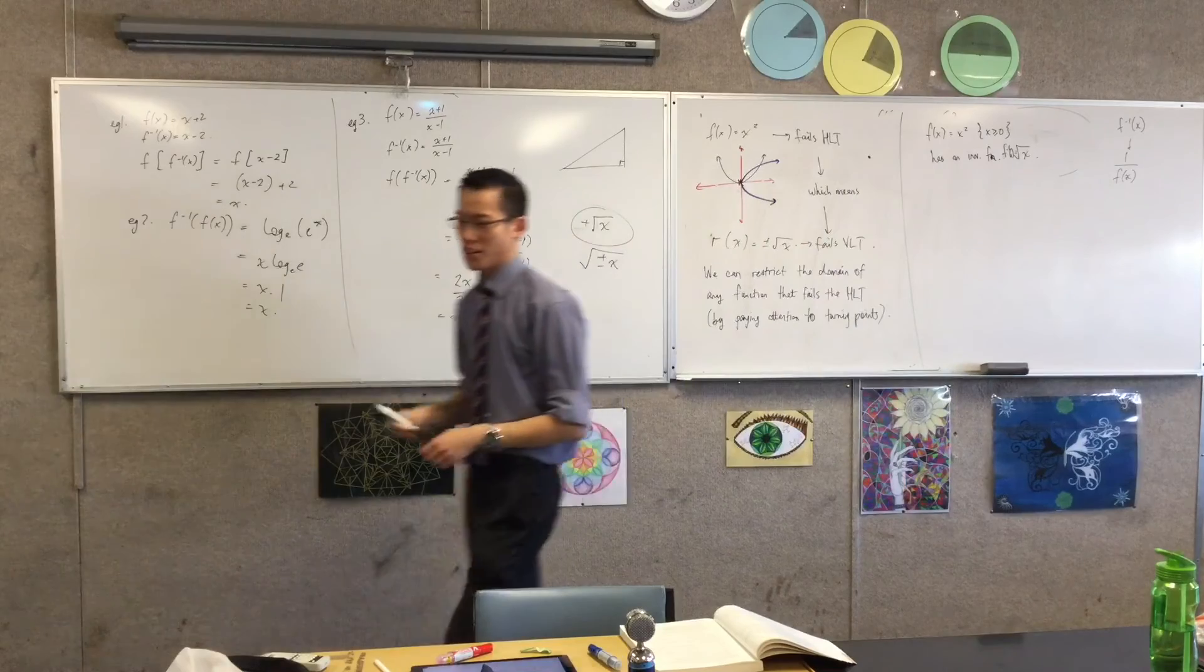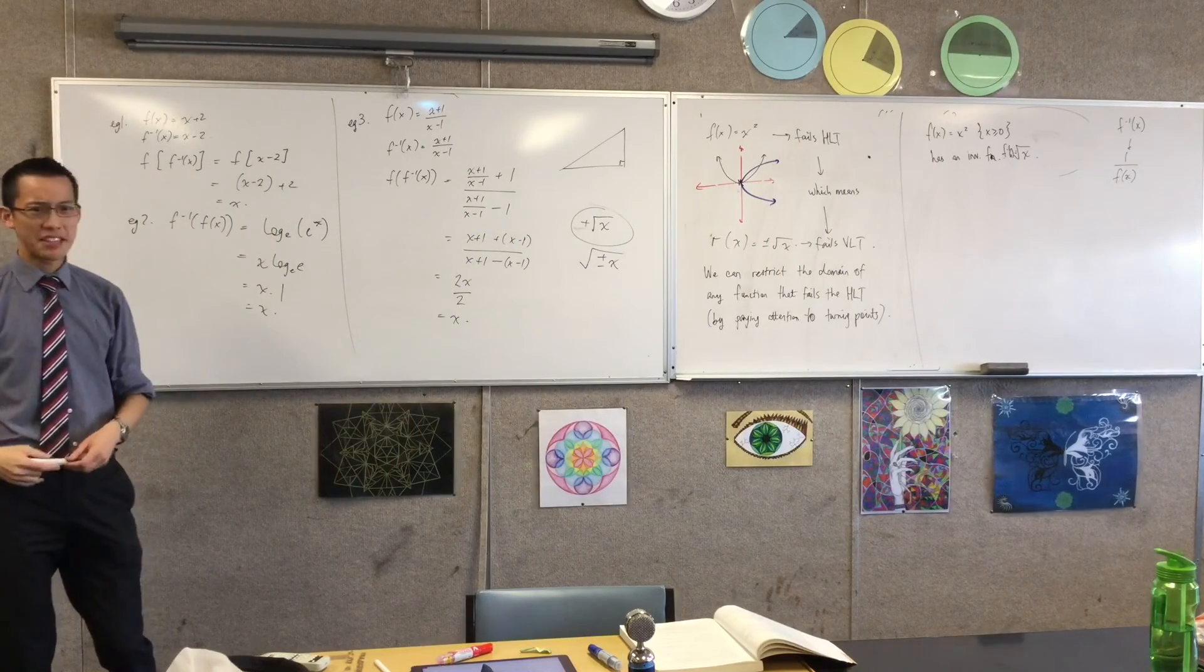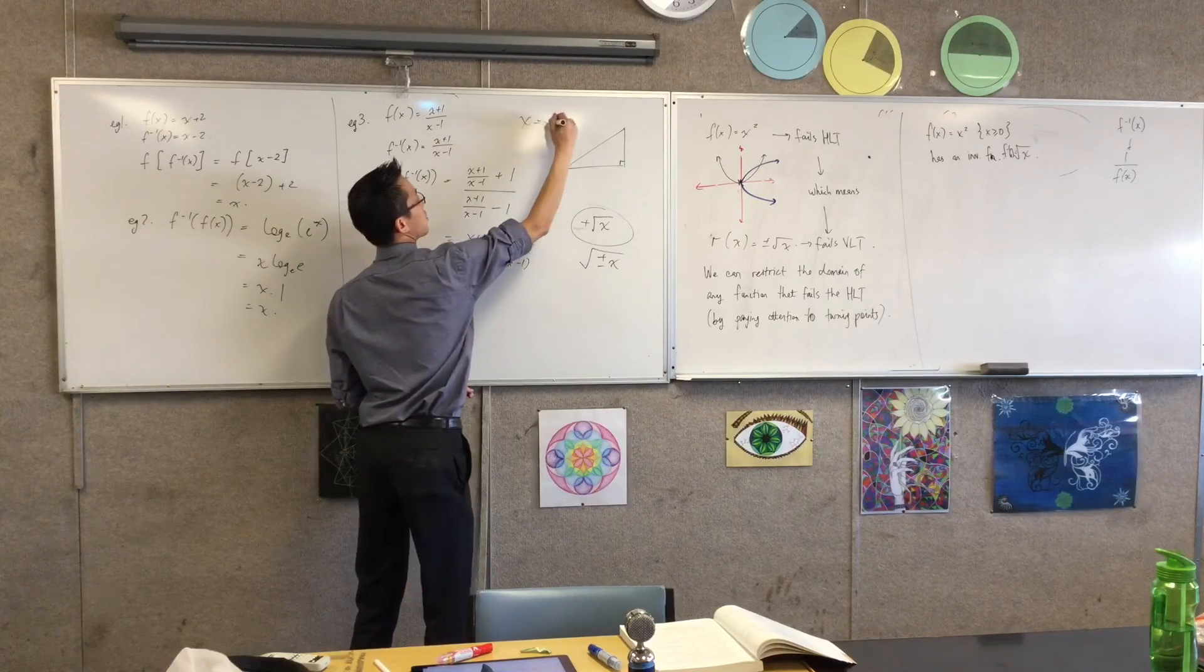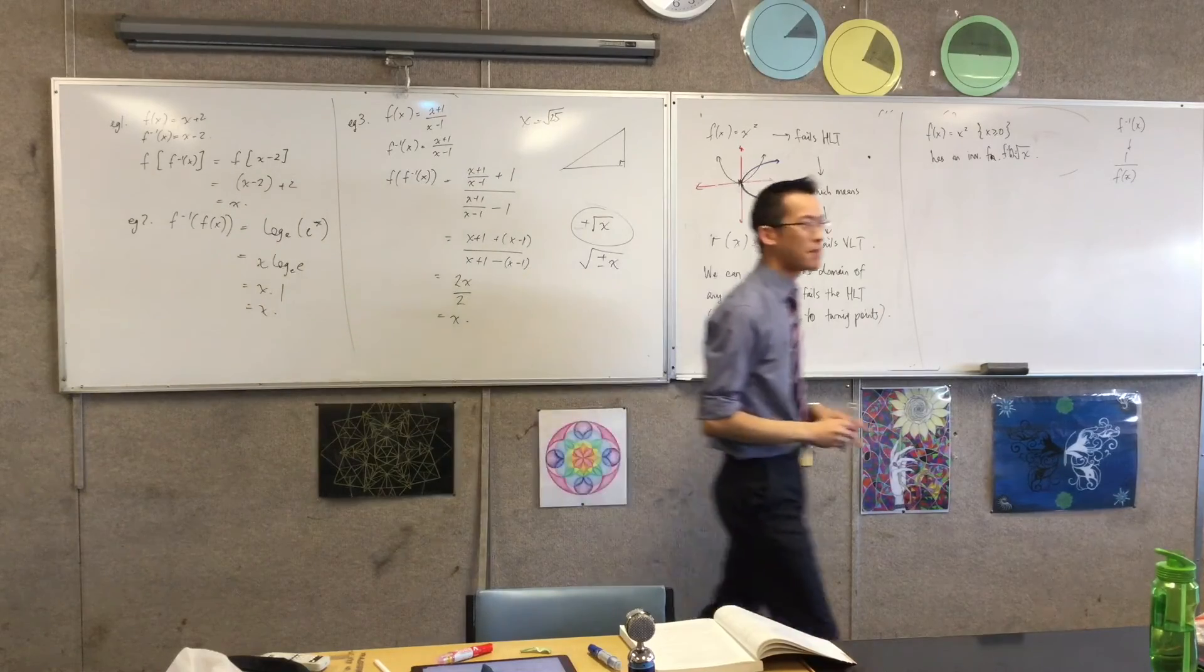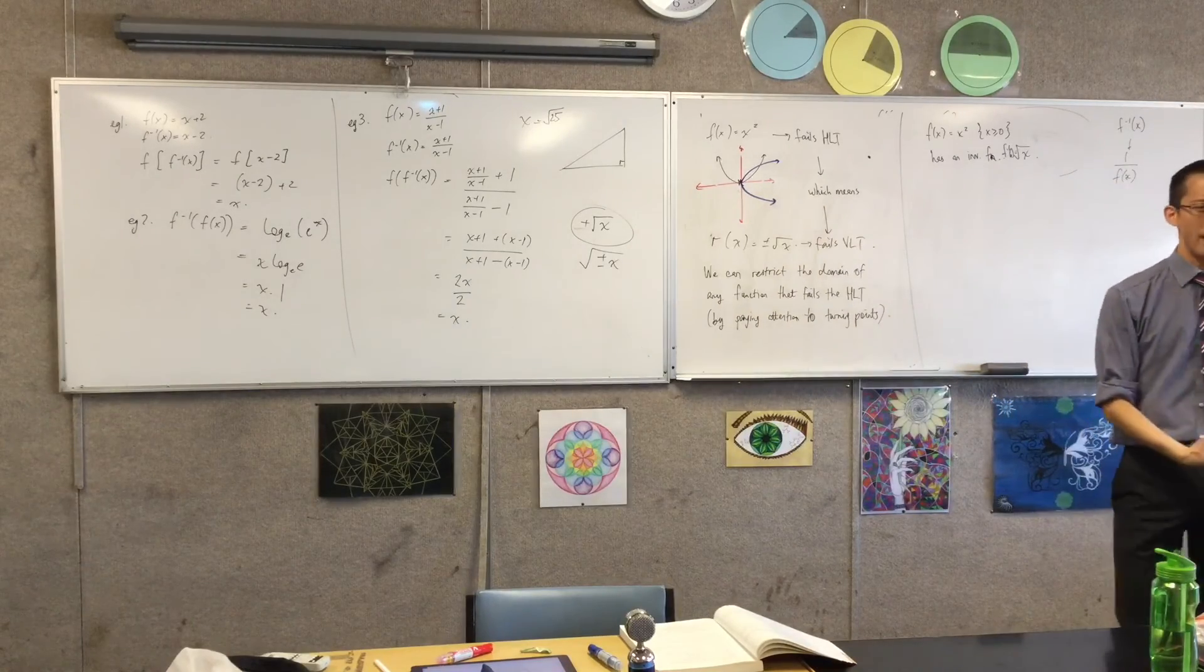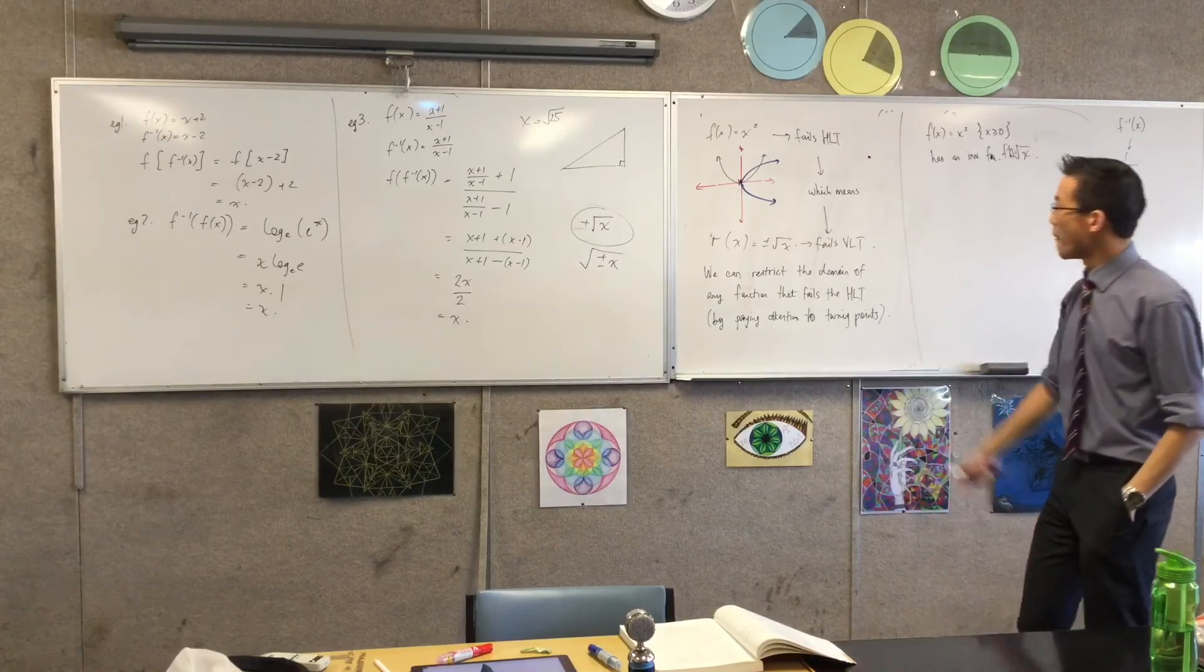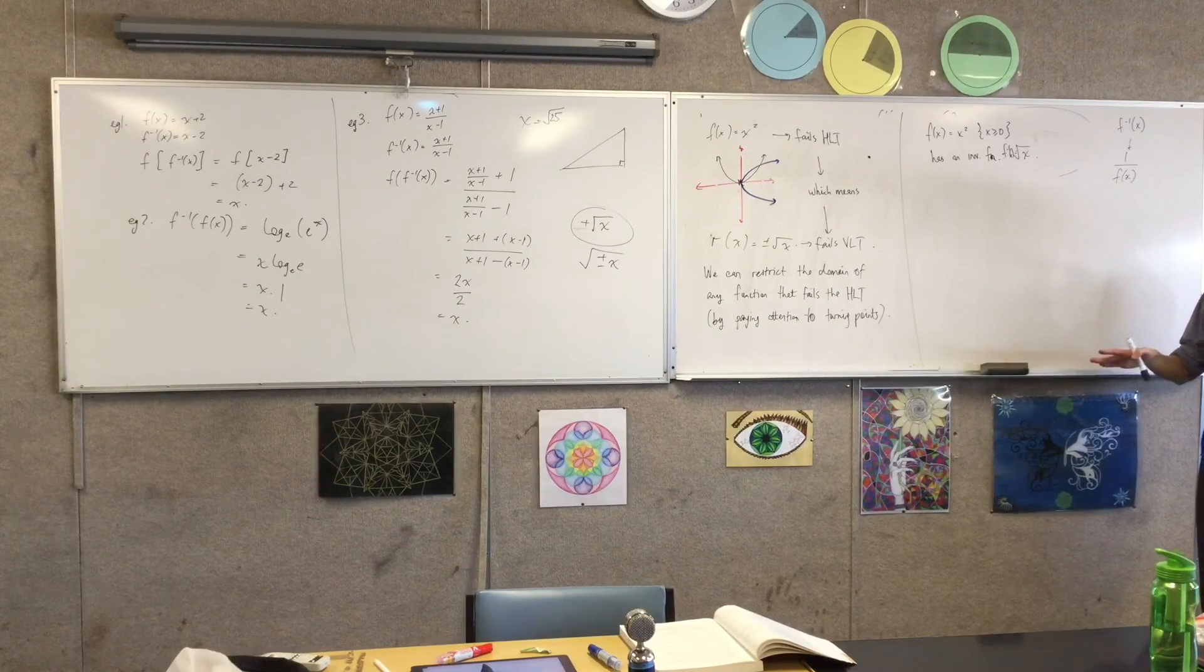But f of x equals x squared in the domain x is greater than or equal to zero. This guy has an inverse function. And we define it. We call it the square root of x. So when you go back, all the way back to when you first learned what these things are, and they said, yeah, but why can't, if I say x equals the square root of 25, why can't it be plus or minus 5? And the reason why is because we define it this way, because it makes so much more sense to us. It's so much more useful if we say, just get one number out of it. Make it a function, not a relation.